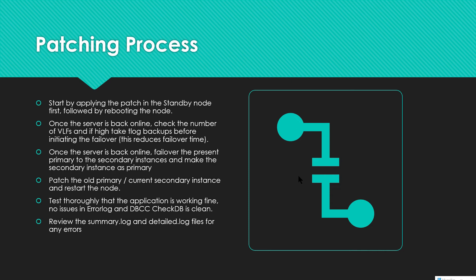Moving on to the patching process — in the current scenario with SQL Server 2016, you may have an Always On configuration. If it is a normal standalone instance, just install the patch. But if you have an Always On or active-passive instance, first apply the patch to the secondary (standby) node, then reboot that node. Once the server is back, check the number of virtual log files (VLFs); if VLFs are high, take a transaction log backup to reduce the time needed for failover.